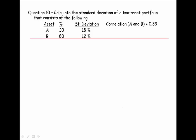Let's use this formula to solve for the standard deviation of a two-asset portfolio consisting of assets A and B. Our formula is W_A squared times sigma_A squared plus W_B squared times sigma_B squared plus two times W_A times W_B times sigma_A times sigma_B times the correlation between A and B.